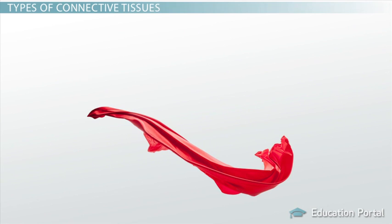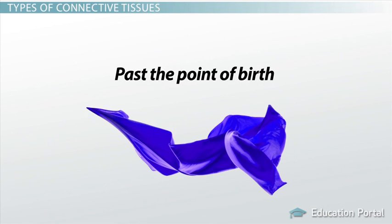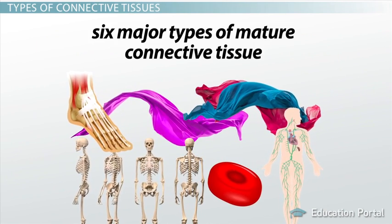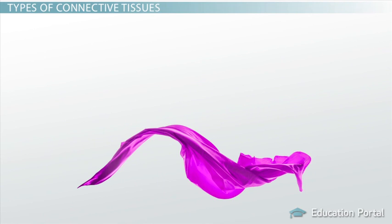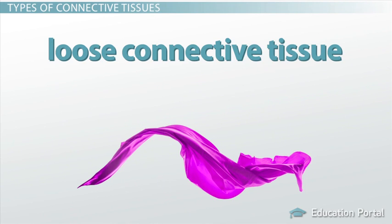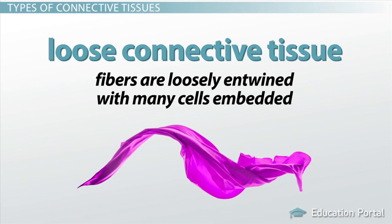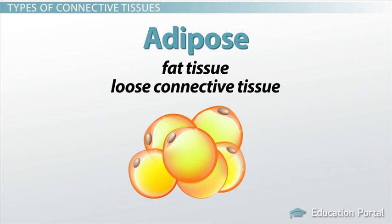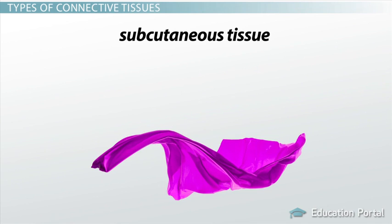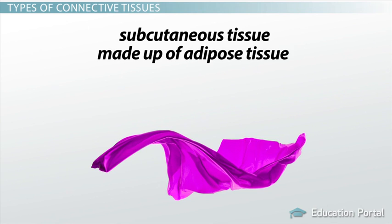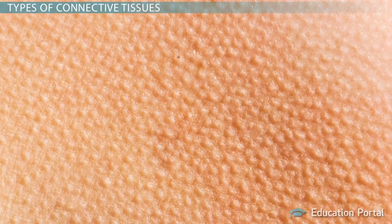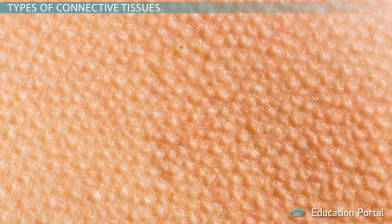Connective tissue in the body comes in a variety of forms. In fetuses and embryos, we find embryonic connective tissue. Past the point of birth, there is mature connective tissue. There are six major types of mature connective tissue. First, we will look at loose connective tissue. In this type, fibers are loosely entwined with many cells embedded. Adipose, or fat tissue, is an example of loose connective tissue. The subcutaneous tissue, or innermost layer of skin, is made up of adipose tissue as well as areolar tissue, another loose connective tissue. If we pull on our skin, we can see that it moves around quite easily because of this loose connection.